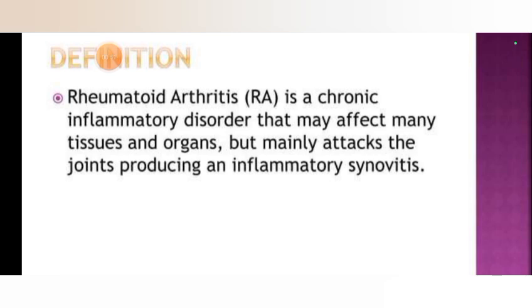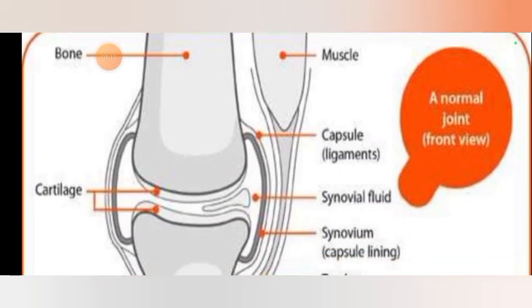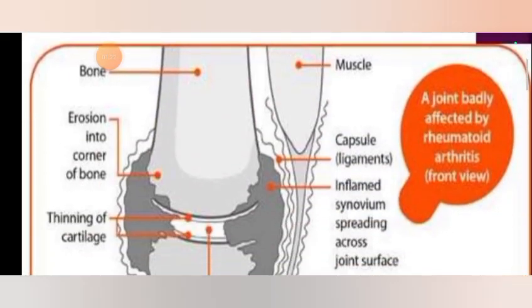Rheumatoid arthritis, also called RA, is a chronic inflammatory disorder that may affect many tissues and organs but mainly attacks the joints, producing an inflammatory synovitis. This picture shows a normal joint front view with no destruction. In contrast, this abnormal joint is badly affected by rheumatoid arthritis, showing destructive cartilage, erosion at the corners of the bones, and thinning of cartilage.